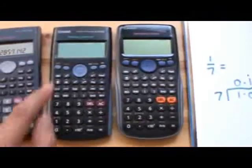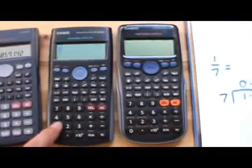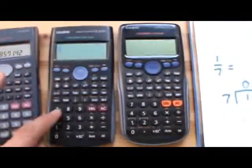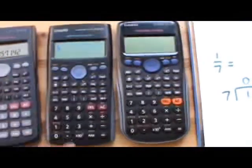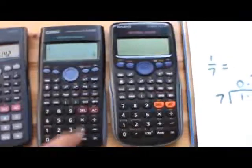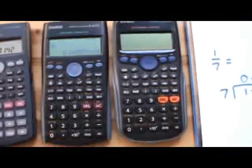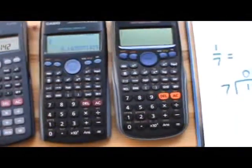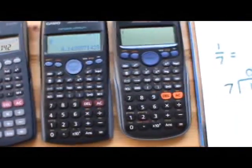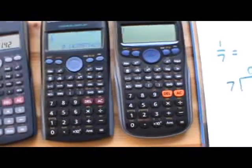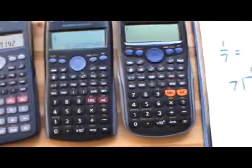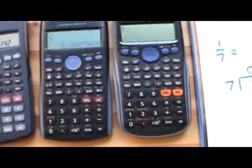Let's try the next one. Press the fraction button. One at the top. Go down. Seven at the bottom. And there we have 1, 4, 2, 8, 5, 7. 1, 4, 2, 9. Because it's rounded the last figure up.